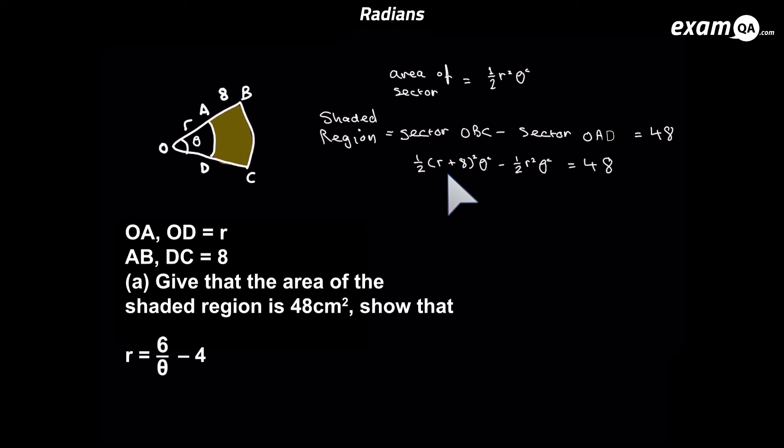Since the radius of the big sector is r plus eight, minus the area of the smaller sector. The radius of the smaller sector, you can see is simply r. So it's just half r squared theta. And of course, that's equal to 48.